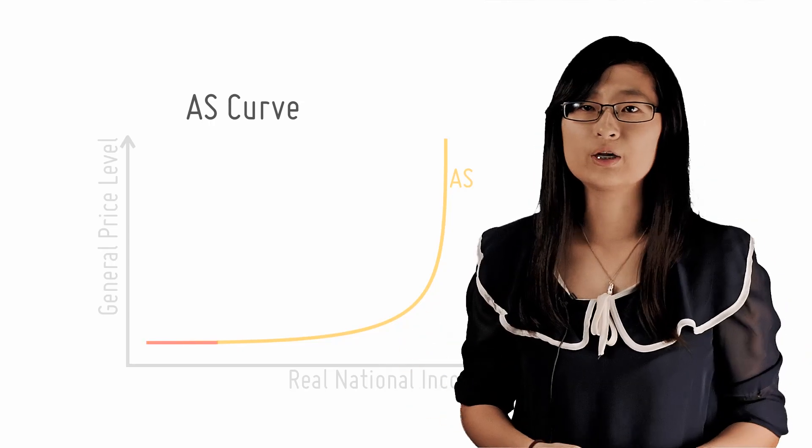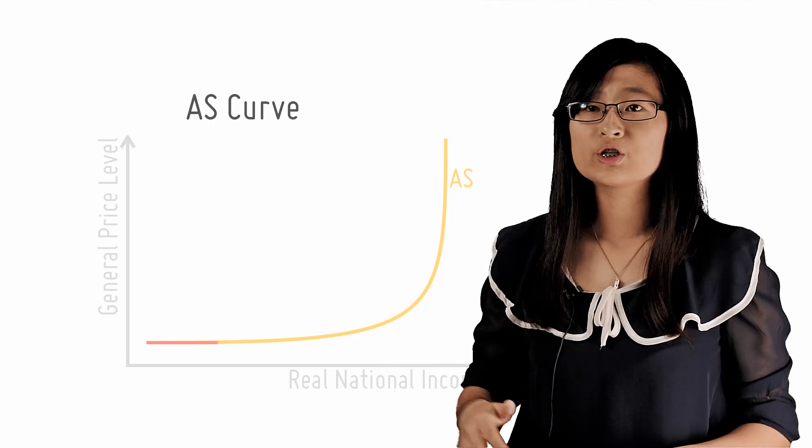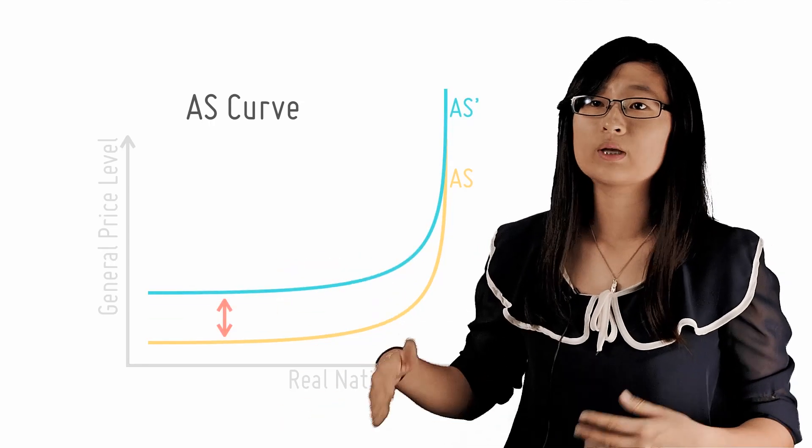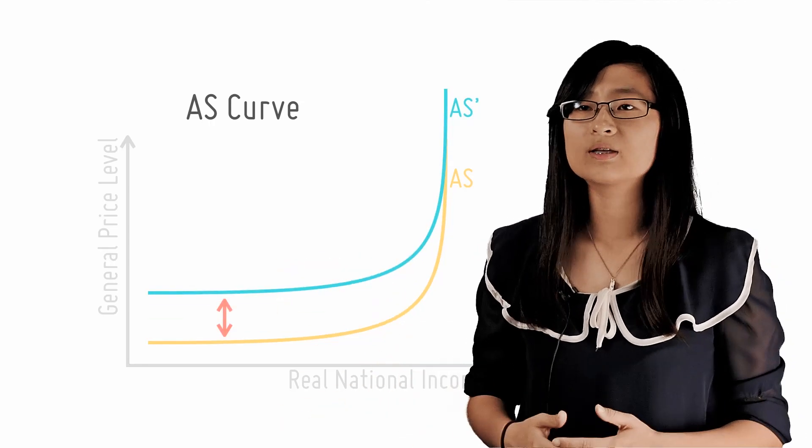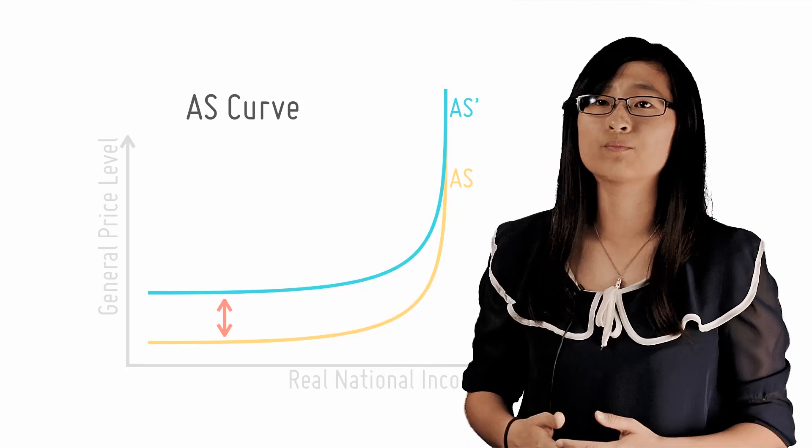Let's start with the horizontal Keynesian range. This horizontal range can either shift upwards or downwards as shown and it is mainly affected by changes in the costs of production.